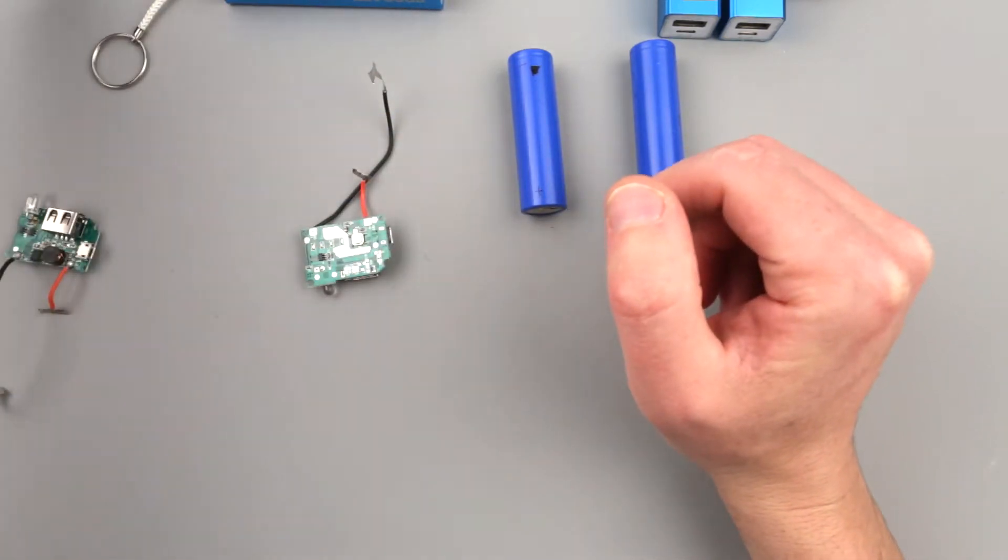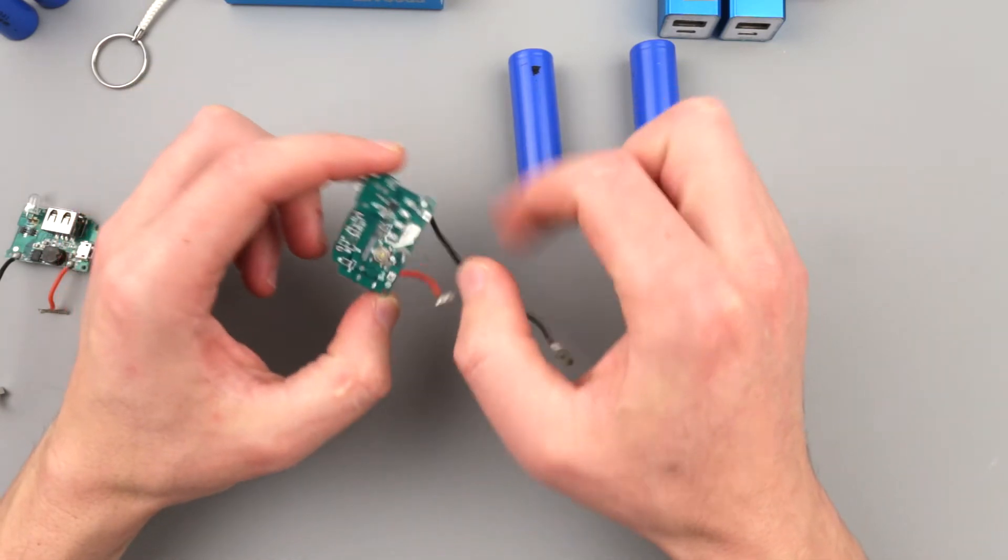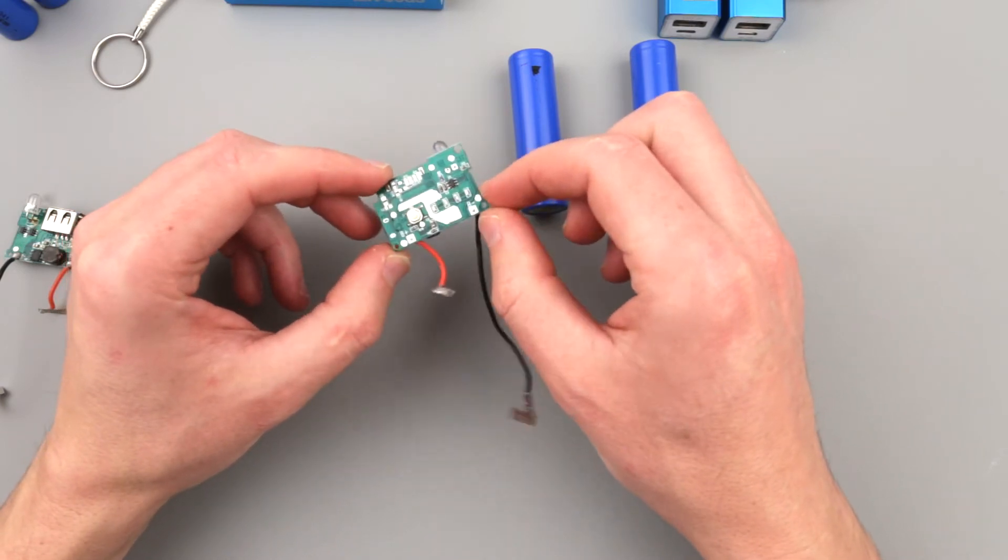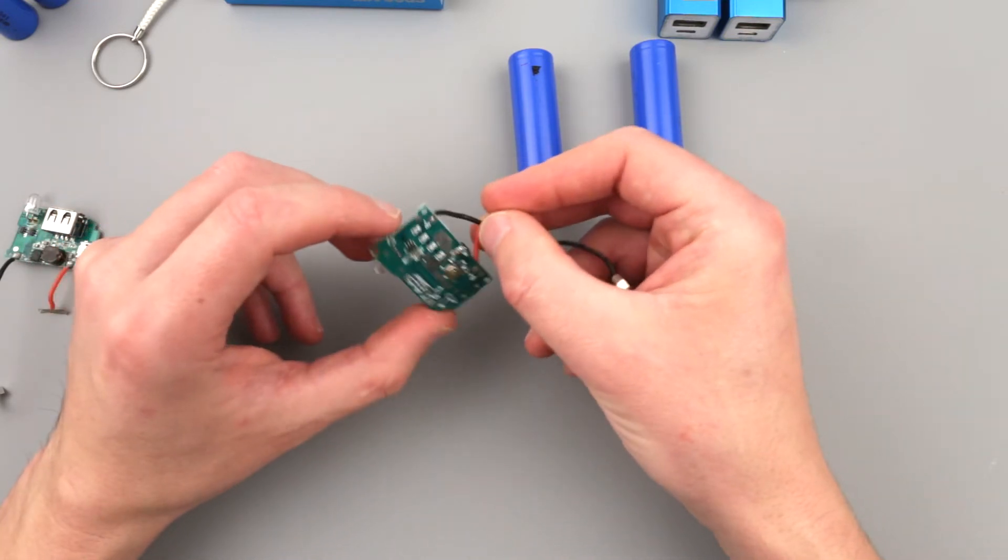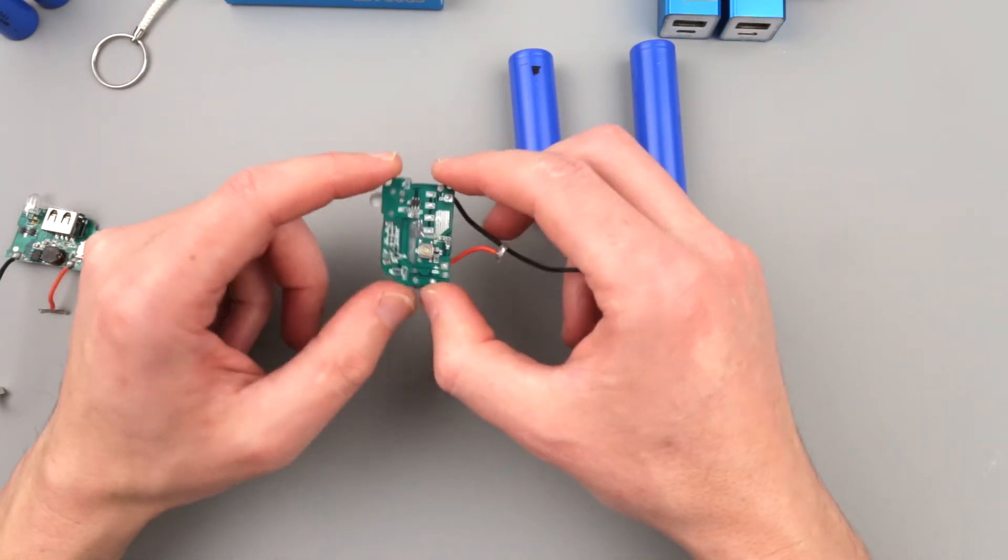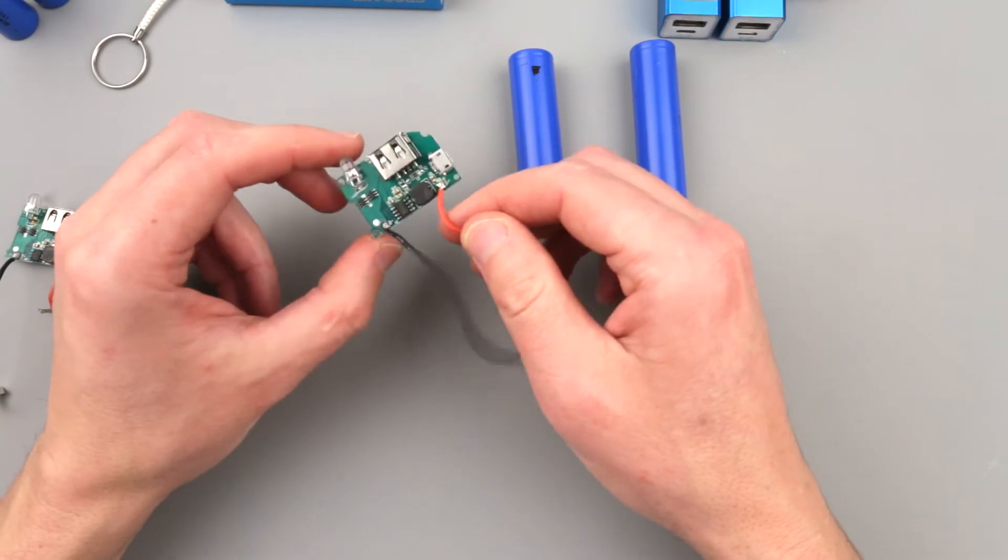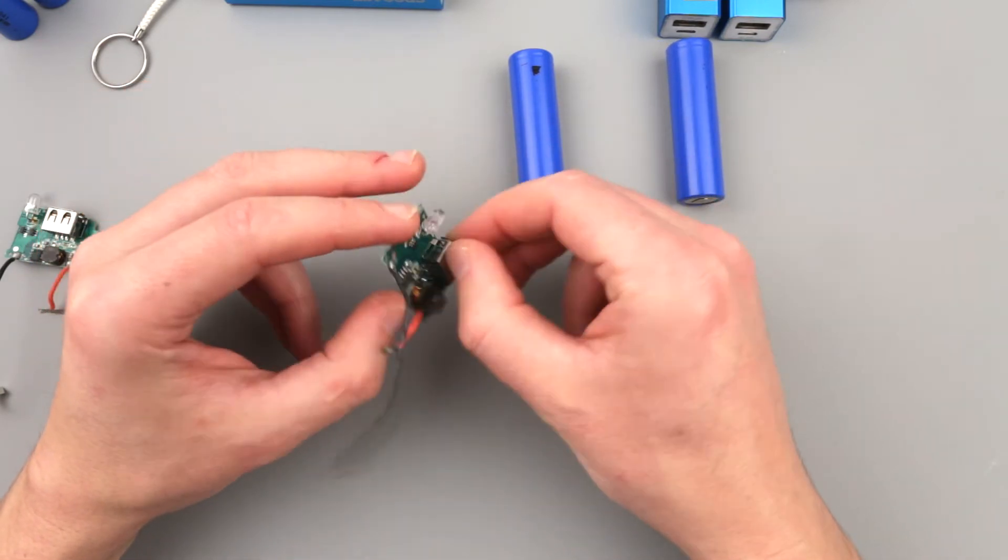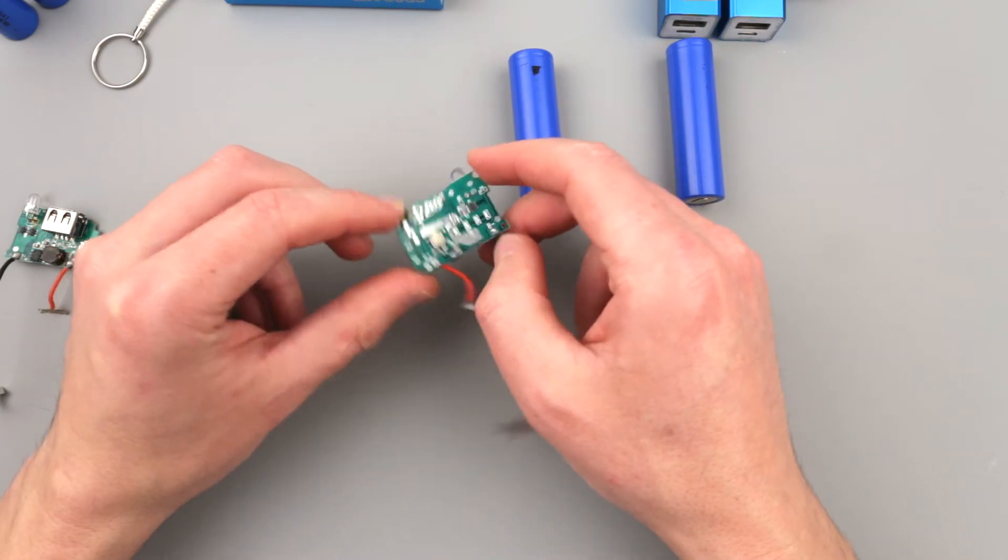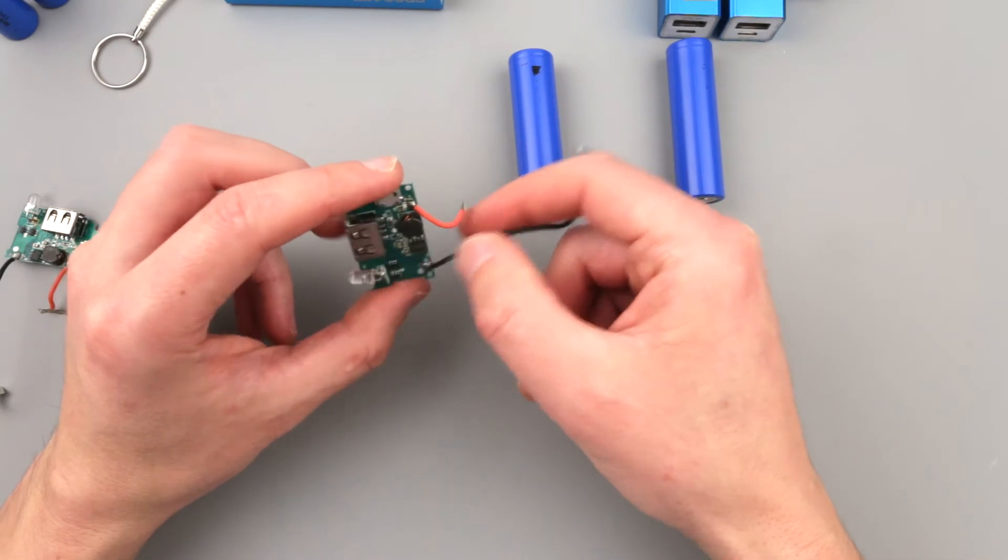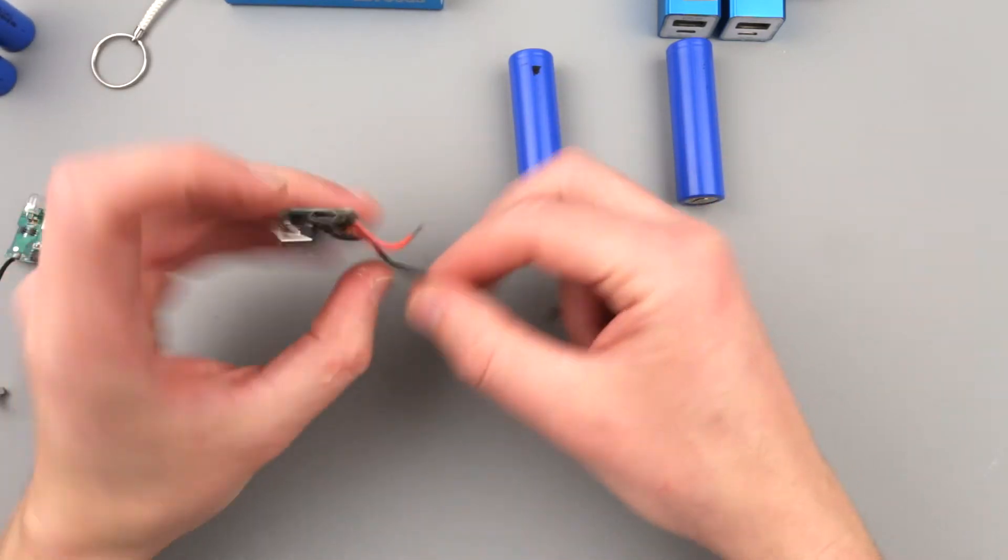One of my theories was that this microcontroller or charge controller has too much standby current and it essentially drains the battery beyond recovery. Turned out I did some tests and this particular one is actually not too bad. Its standby current is only 50 microamps. I think this is relatively decent standby current for this sort of device. I must say this is still okay. This is probably not the case of those batteries failing.